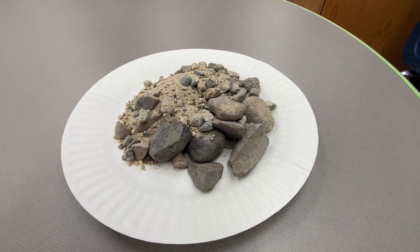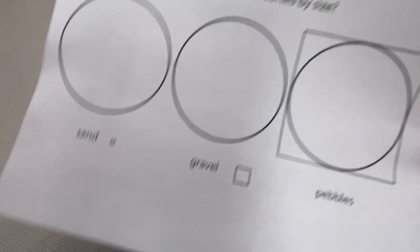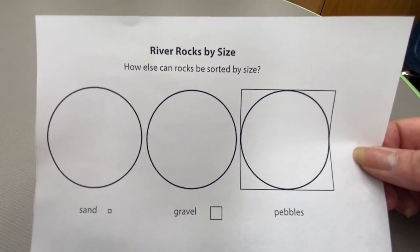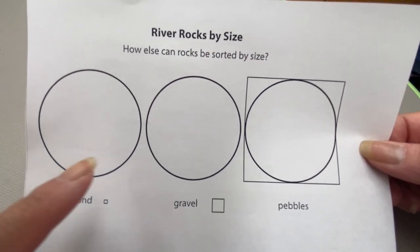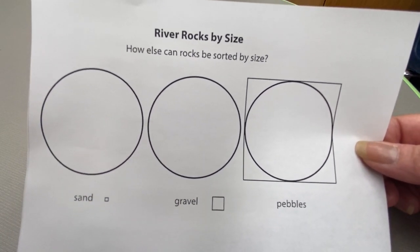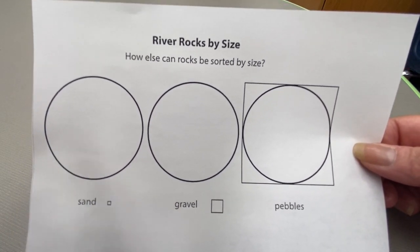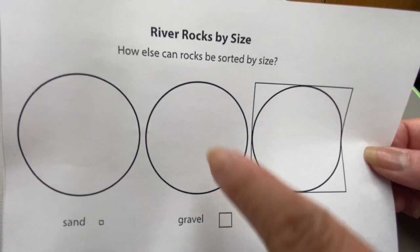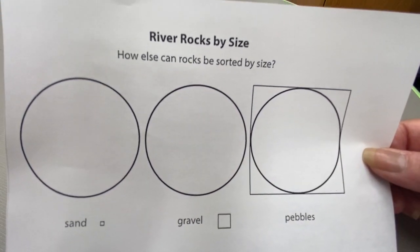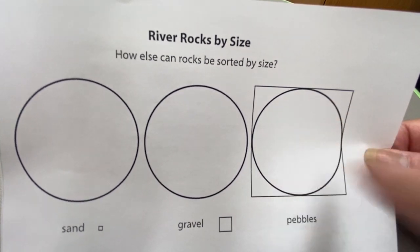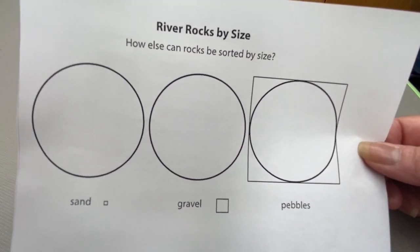One way is by hand. The science journal sheet titled River Rocks by Size shows us that if it fits in this little box, it goes into the sand circle. If it fits in this little box, it goes into the gravel circle. And if it fits in this big box, it goes in the pebble circle.